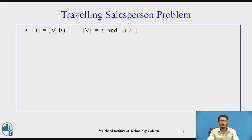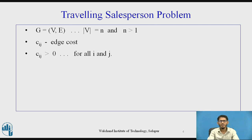Now let us see the Traveling Salesperson Problem. We have a graph G = (V, E) where V is a set of vertices and E is a set of edges. The number of vertices is |V| = n, and n is greater than 1, so we have more than one vertex in the graph. The cost c_ij is generally greater than 0 for all i and j. If edge (i, j) does not exist in E, then c_ij is equal to infinity.